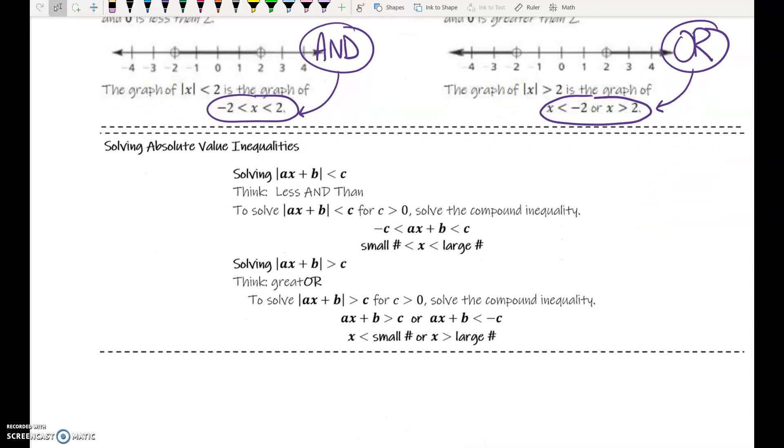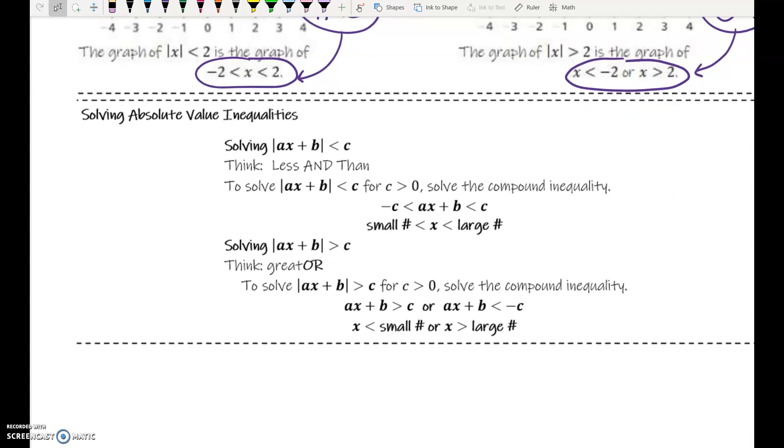The box right below that kind of summarizes that. If we have absolute value less than something, we're going to say less and than. Less and. I want you to get that stuck in your head. Less and.